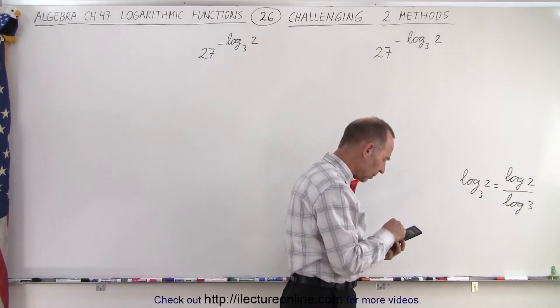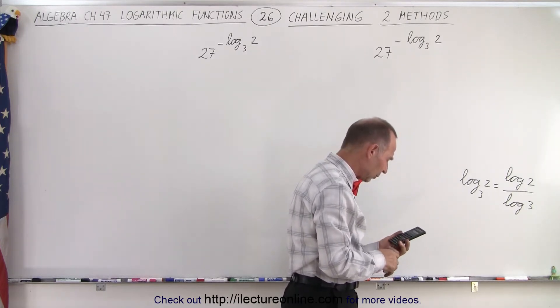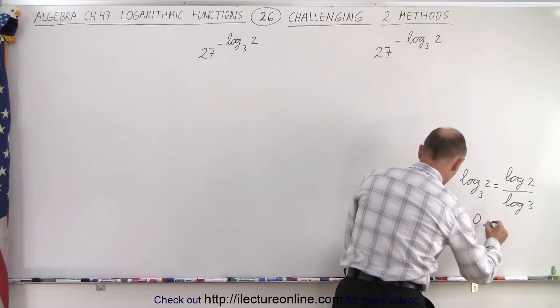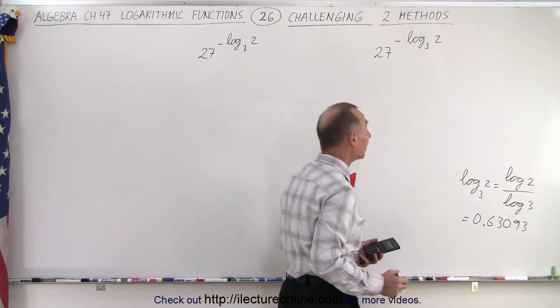So we take 2, take the log, divide it by 3, take the log, and that's equal to 0.63093.